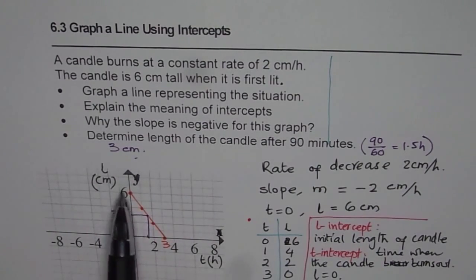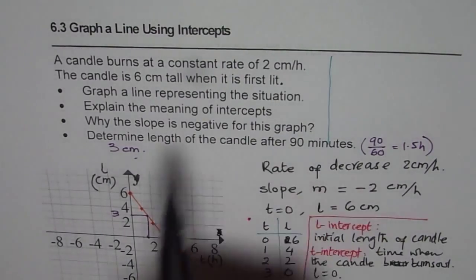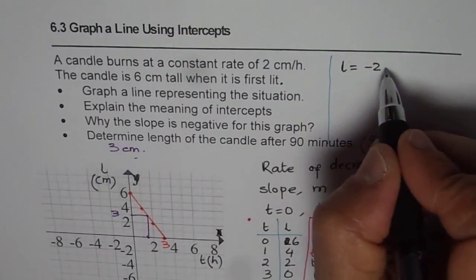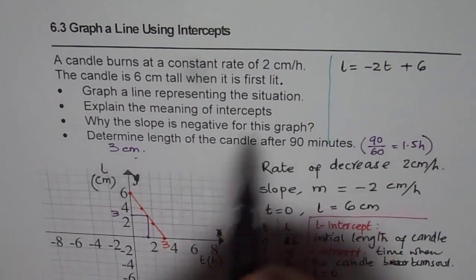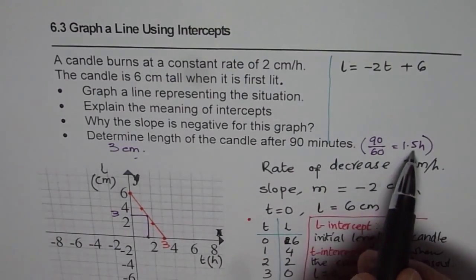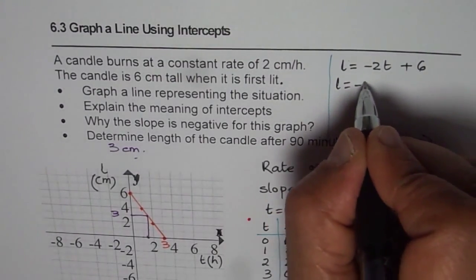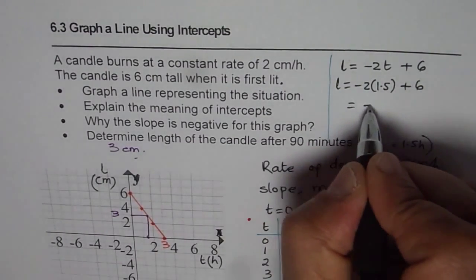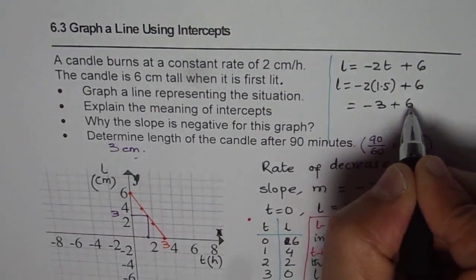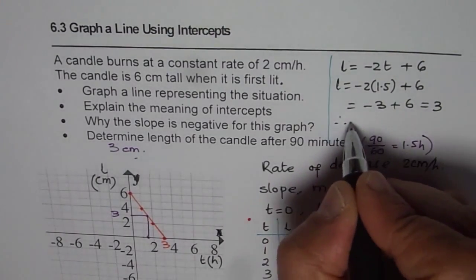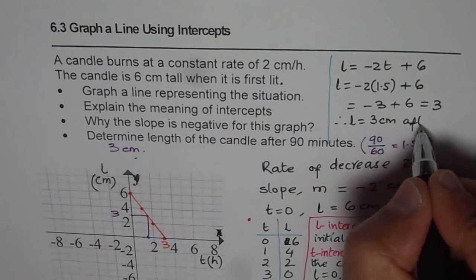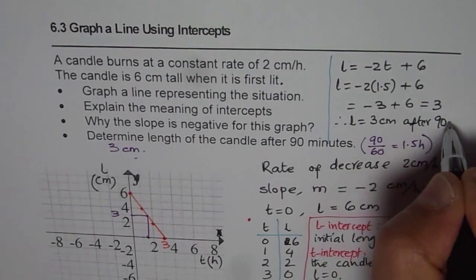The alternate way of doing it is to find the equation. We can always find the equation. Let me write down the equation. We know the y-intercept or l-intercept is 6 and slope is minus 2. So we can write this equation as l equals minus 2t plus 6. Now for t equals 1.5 hours, we can say l equals minus 2 times 1.5 plus 6. That is minus 3 plus 6 and that equals 3. And therefore, length equals 3 centimeters after 90 minutes.